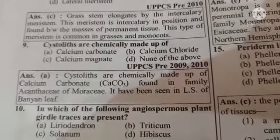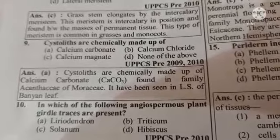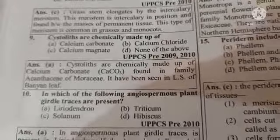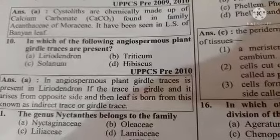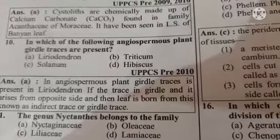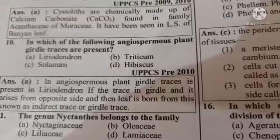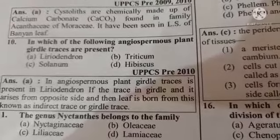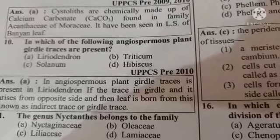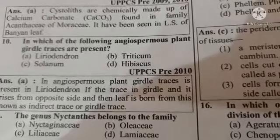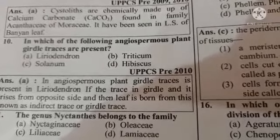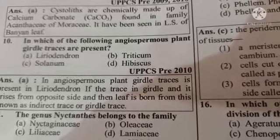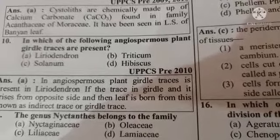Next question: in which of the following angiosperms are girder traces present? Option A Liriodendron, option B Triticum. The answer is option A, Liriodendron. Next question: the genus Nyctanthus belongs to the family option A Nyctaginaceae, option B Oleaceae, option C Liliaceae, option D Lamiaceae. The answer is option B, Oleaceae.